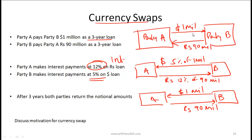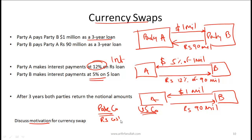In this swap we assumed a fixed rate for both currencies. Now let's briefly discuss the motivation for a currency swap. Consider two companies: Park Co, a Pakistani company well known in Pakistan with a low rupee borrowing cost but needing dollars to expand in the US, and US Co, a US company with a low dollar borrowing cost but needing rupees to invest in Pakistan.